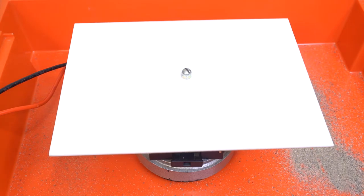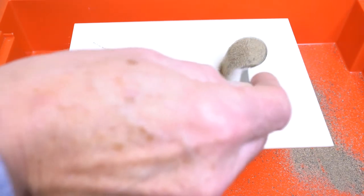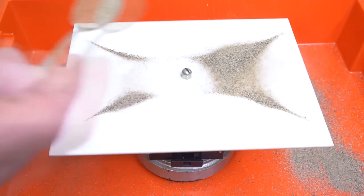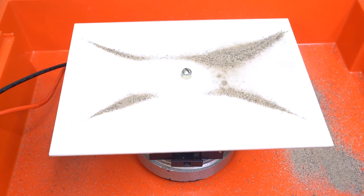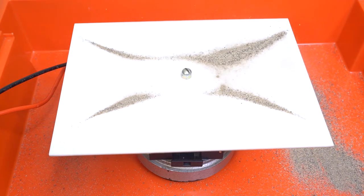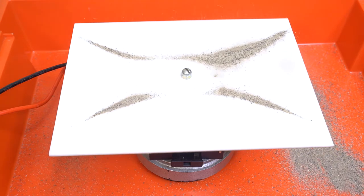Sprinkling dry sand onto the plate reveals the nodes and antinodes. Nodes are regions of the plate which are not moving.